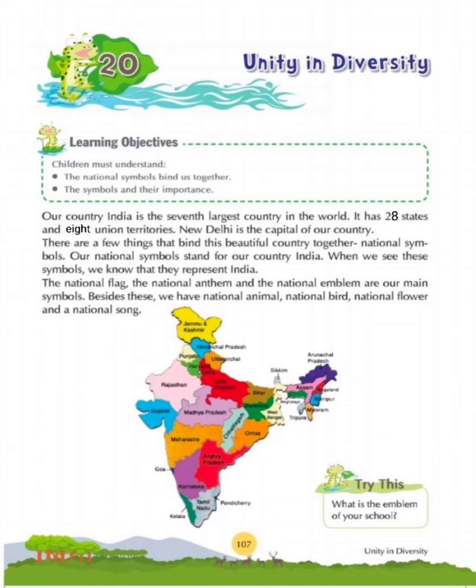Our country India is the 7th largest country in the world. It has 28 states and 8 union territories. Earlier there were 29 states, but Jammu and Kashmir has now been converted into a union territory, making it 28 states. New Delhi is the capital of our country.